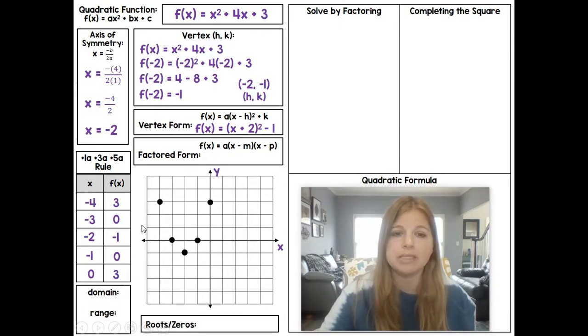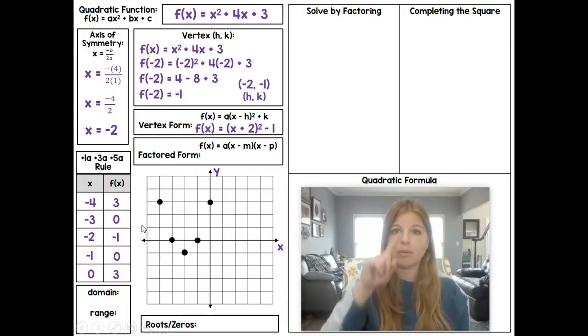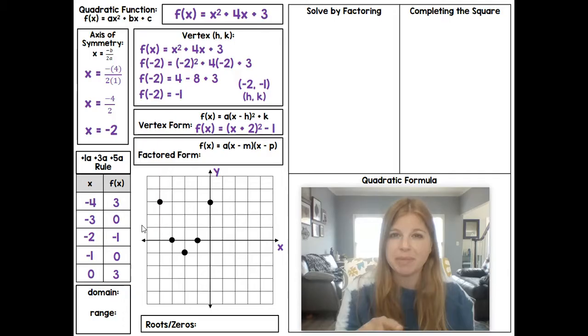We make our x and y axis with no problem. We start plotting our points. We should instantly start to see that when we plot our points, it makes a nice U-shaped graph. It's not a straight line. We're not making this jagged graph. And our parabola is this nice smooth curve. Notice my vertex of (-2, -1) is right down here.